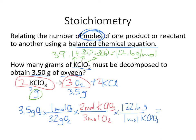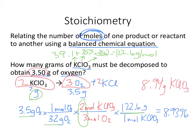So I'll have 3.5 divided by 32 times 2 divided by 3 times 122.6. When you multiply that all together, you end up with 8.9396. Rounding to 3 significant figures — because of the 3 significant figures in the original problem — we get 8.94 grams of KClO3. And that's stoichiometry.